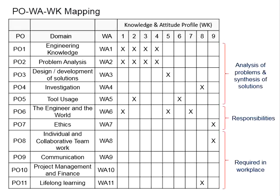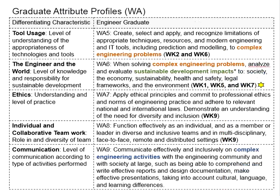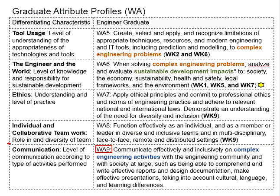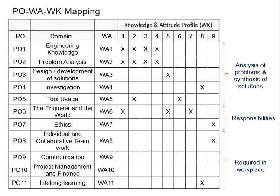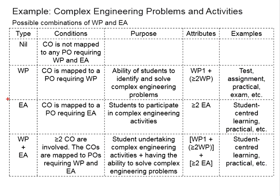This applies as part of the teaching and learning activities as well as the assessment. As for complex engineering activities, this will be under WA9, which is communications. You may refer to your list of program outcome-course outcome mappings attending to WA9. When you have a course outcome attending to the program outcome addressing WA9 communications, then you will require complex engineering activities.